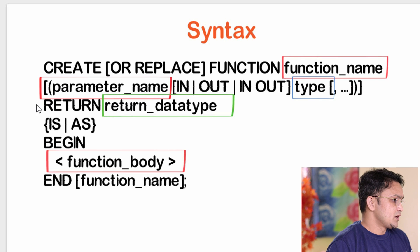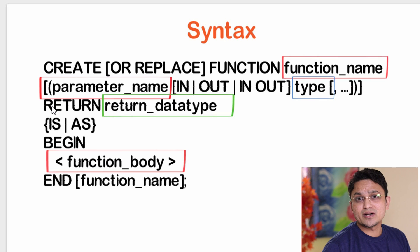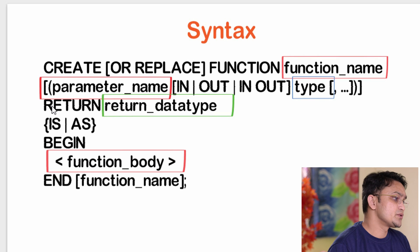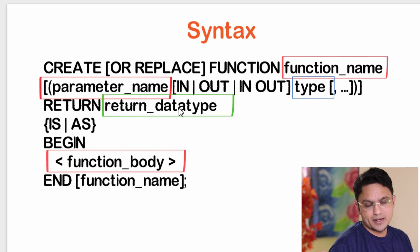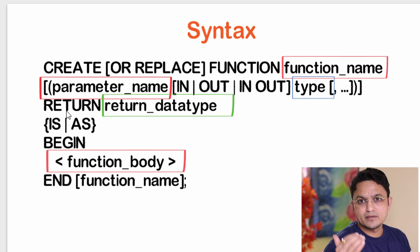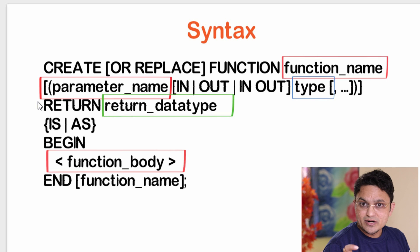The third line defines what kind of value you are returning — whether it is a NUMBER, a character, or some other type. This is the RETURN keyword followed by the return type. This is the major difference between a procedure and a function. If you have seen my procedure video, this line is absent there. The major difference is: a function returns a value, whereas a procedure does not return any value.